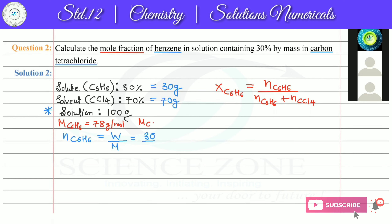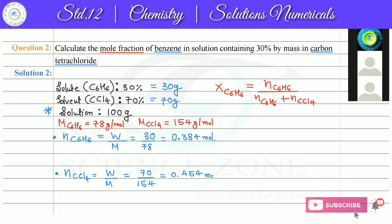Similarly, we calculate the moles of carbon tetrachloride (CCl4). Using the same formula: weight upon molecular weight. The weight of CCl4 is 70 grams (from our assumption) and its molar mass is 154 grams per mole. So moles of CCl4 = 70 divided by 154 = 0.454 moles.